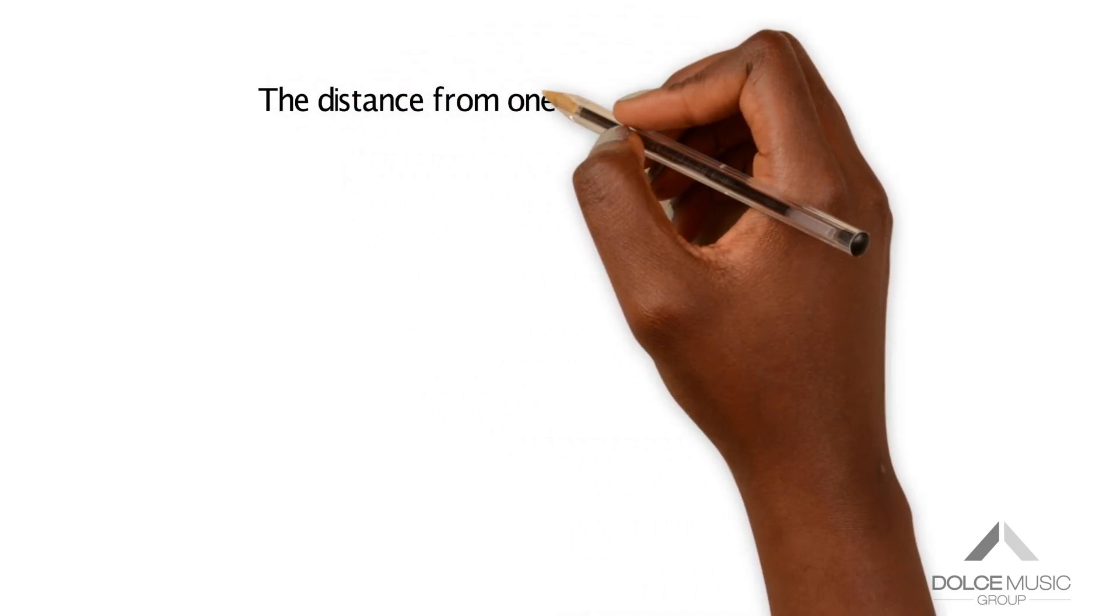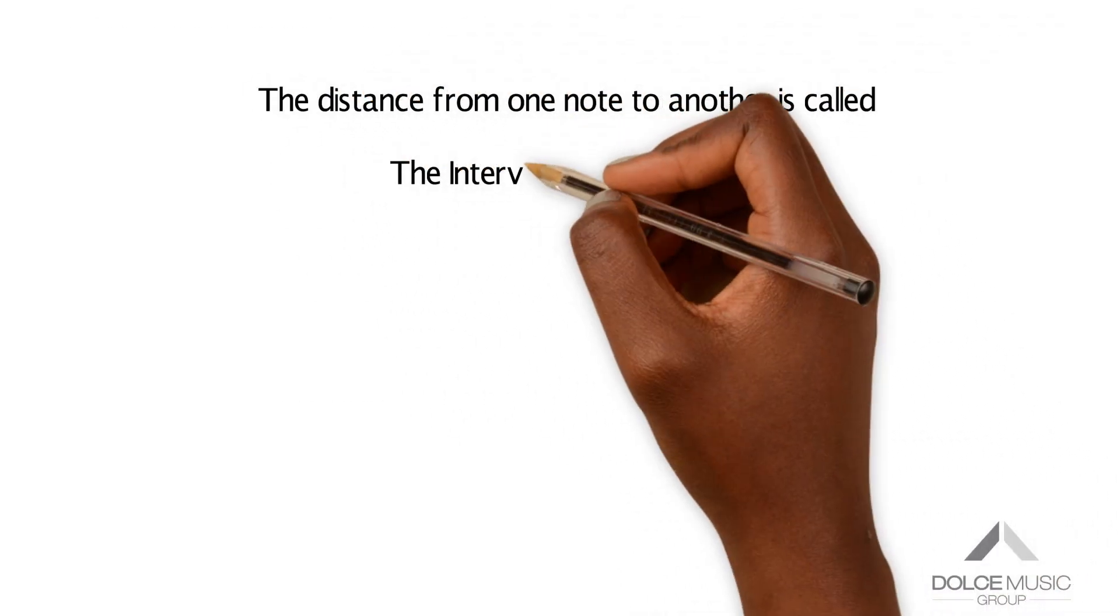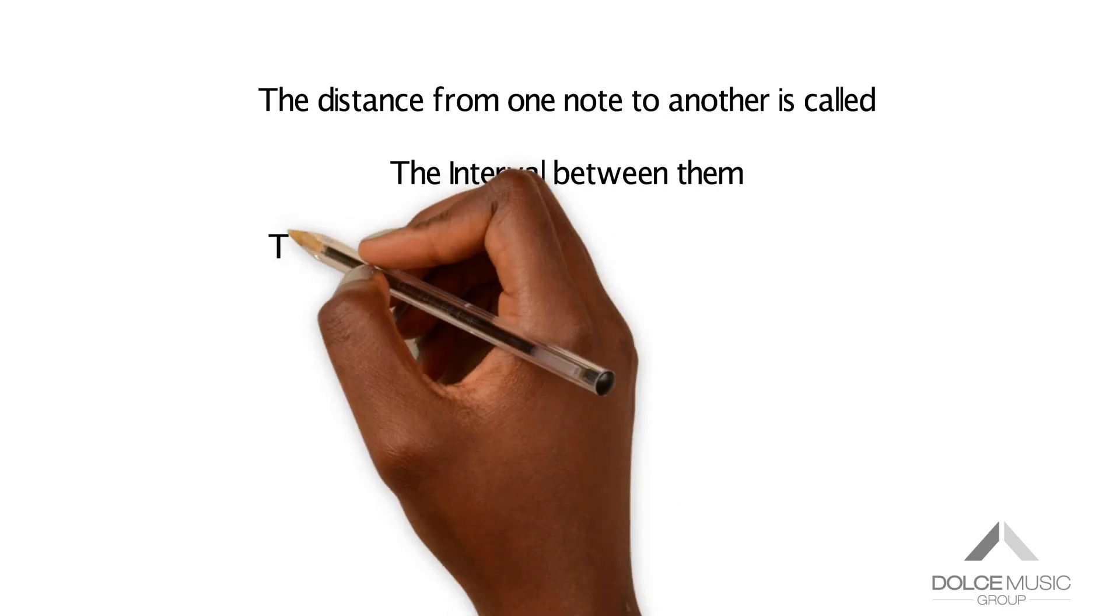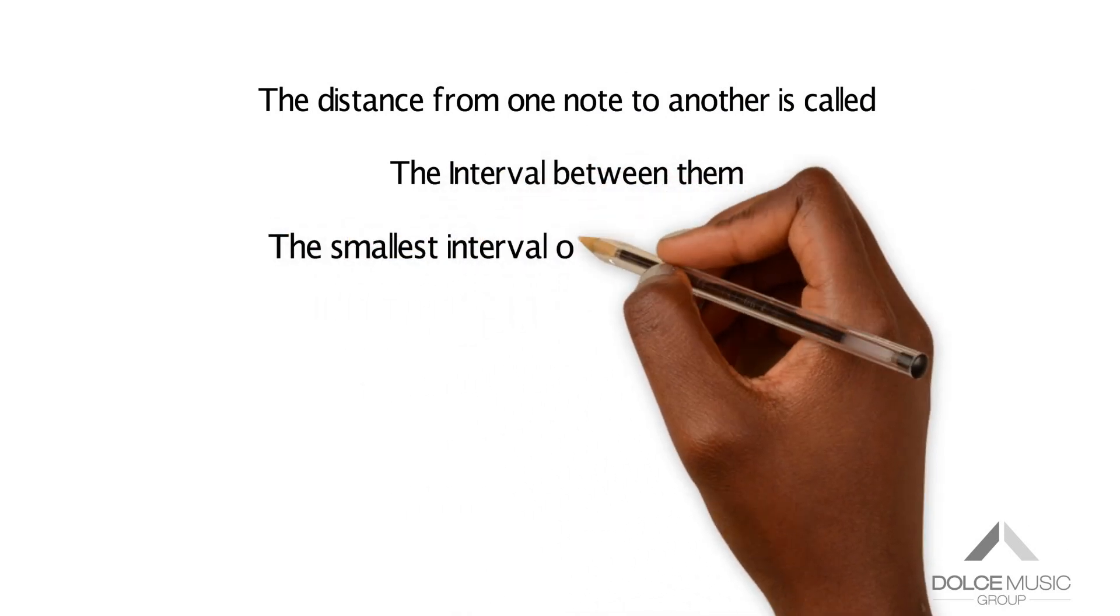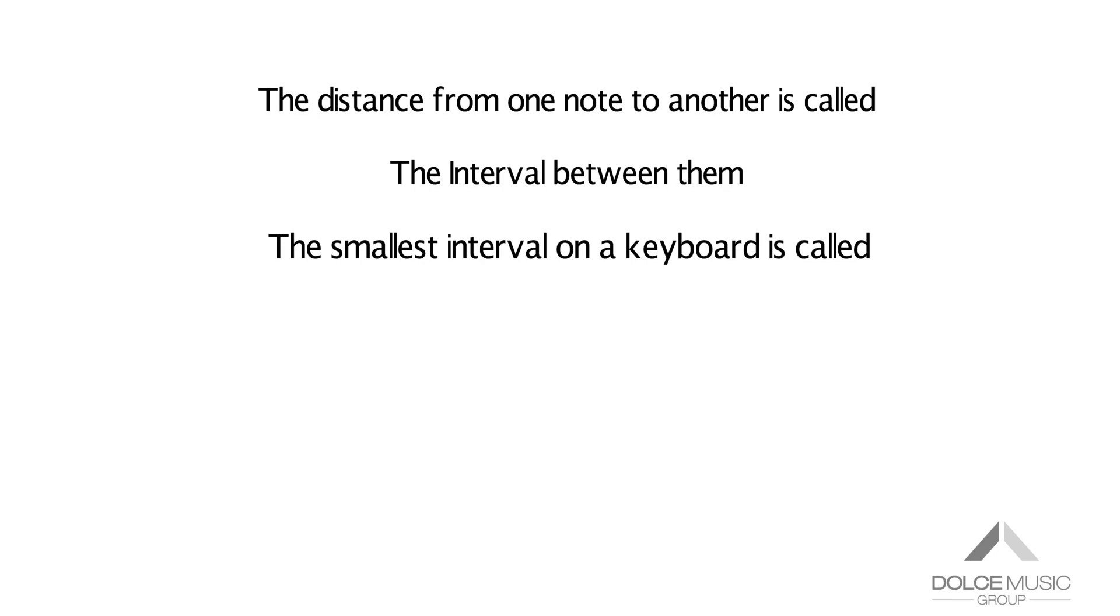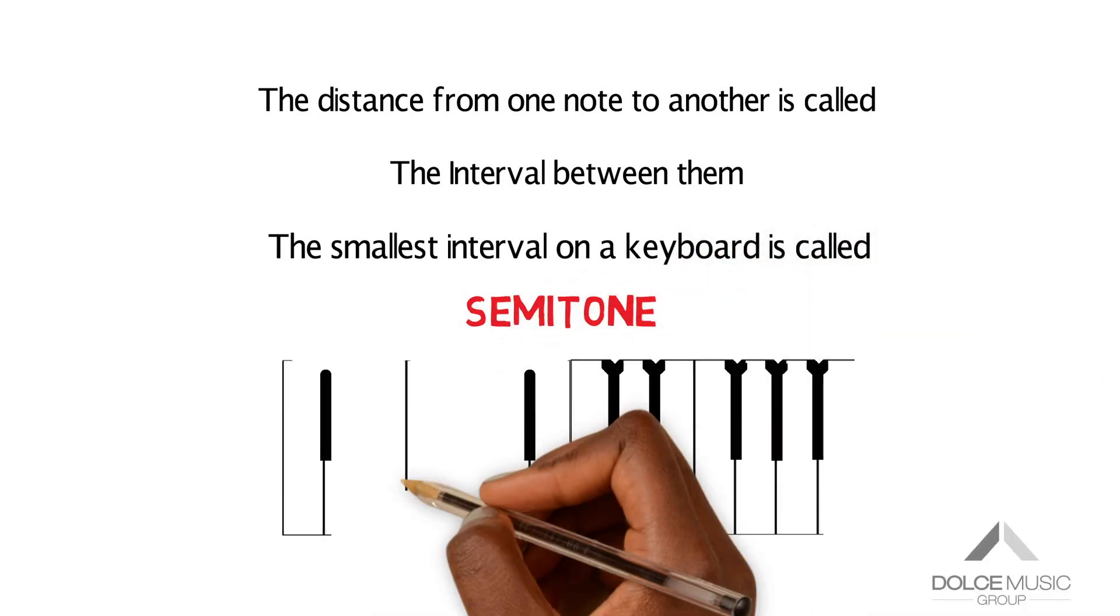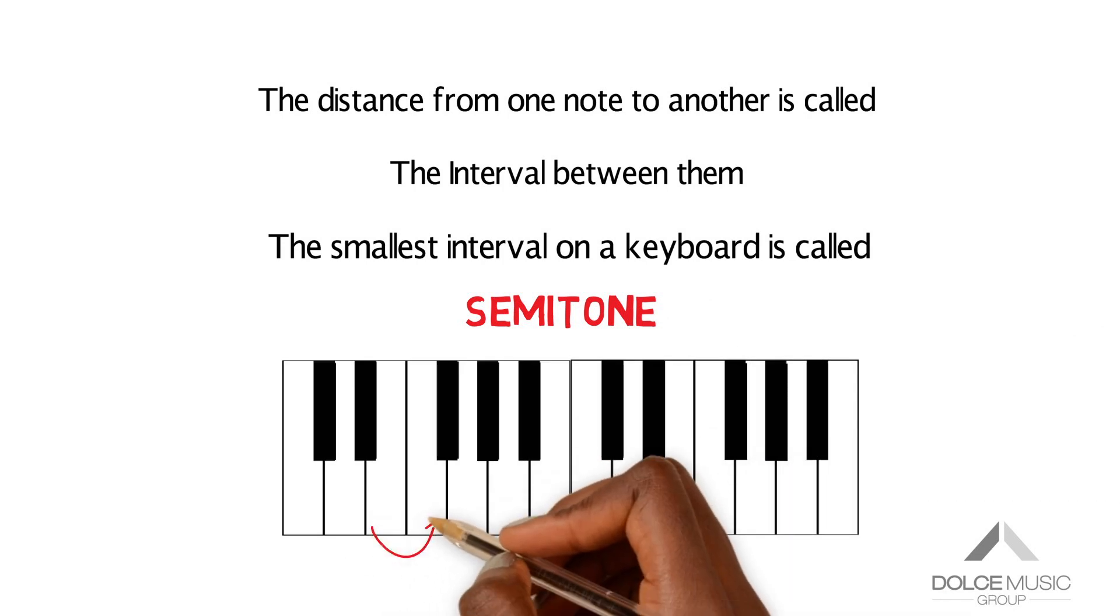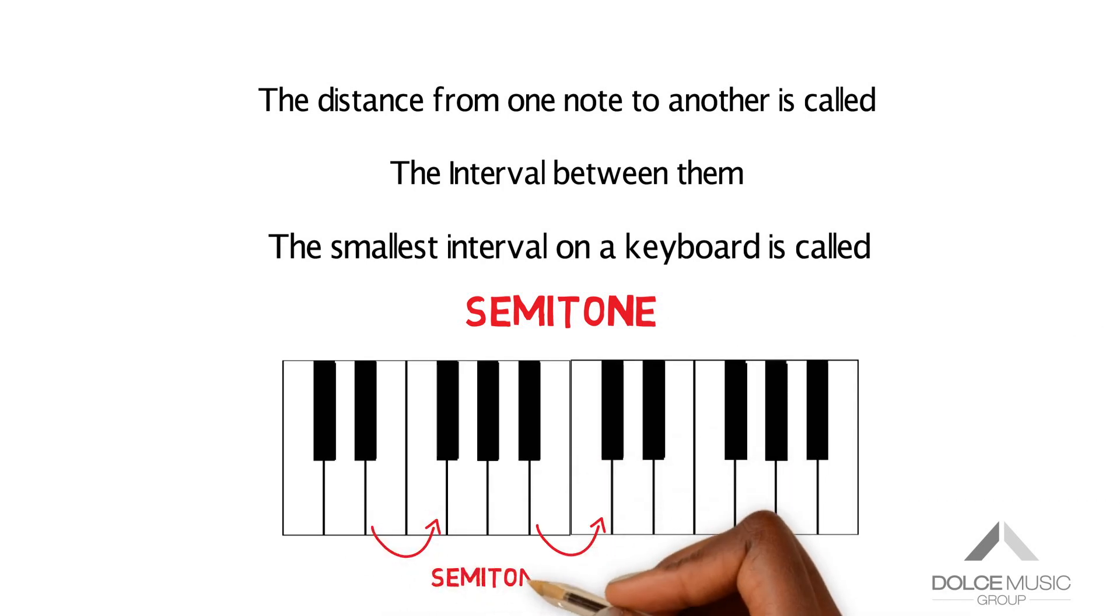The distance from one note to another is called the interval between them. The smallest interval on a keyboard is the one between any note and the note immediately next to it. This interval is a semitone. The interval between the white note B and the white note C is a semitone and so is the interval between E natural and F natural. All other semitones include a black note.